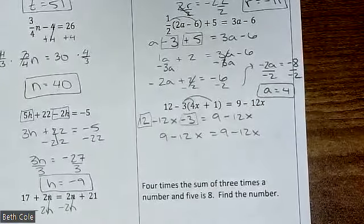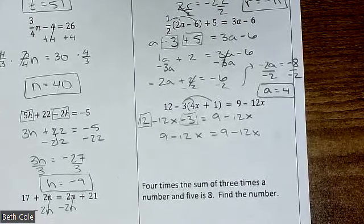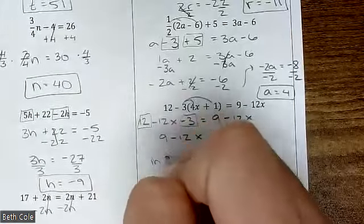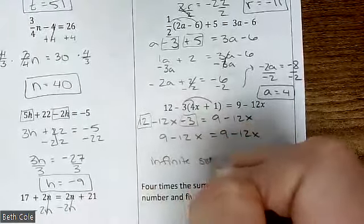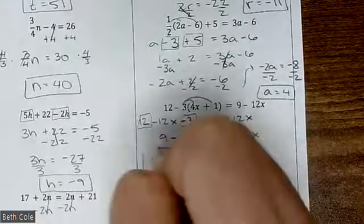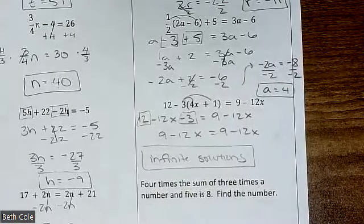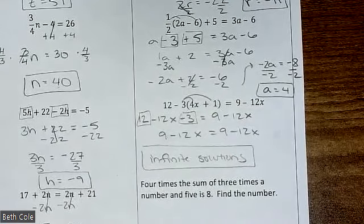Then you're going to stop and use your brain and look — what do you think we got? Nine minus 12x equals 9 minus 12x — it is infinite solutions. Because you got something that makes sense: the same thing equals the same thing. So that's infinite solutions. If you get something that doesn't make any sense, then it's no solution.